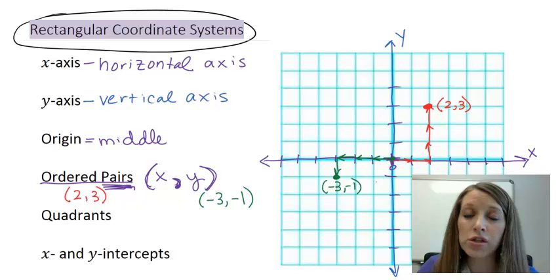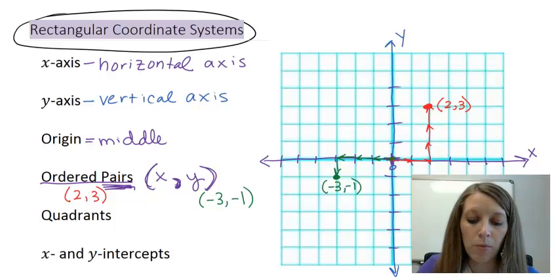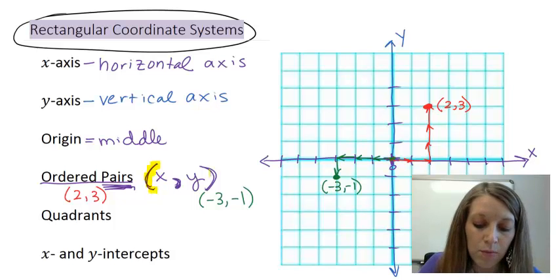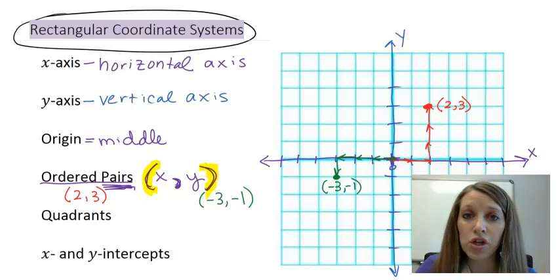Remember x-direction or horizontal first, left and right. And then vertical, y-direction or up and down second. Now, I do want to make sure that when you do put in these ordered pairs as answers, whether it be online homework or written homework, that you do have them with the parentheses around them. If you don't have the parentheses around them, then either version of the homework will count these as incorrect.